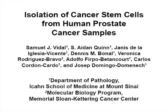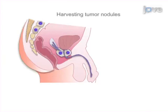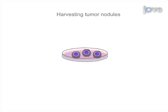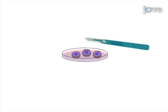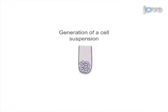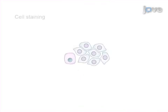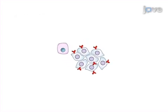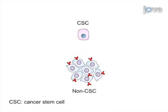The overall goal of this procedure is to describe the isolation of prostate cancer stem cells from human tissue by FACS. This is accomplished by first processing prostate cancer tissue harvested from surgical specimens. In the second step, a cell suspension is generated from the tissue sections, and the cells are labeled with fluorescent antibodies. In the final step, the prostate cancer stem cells are sorted by FACS.